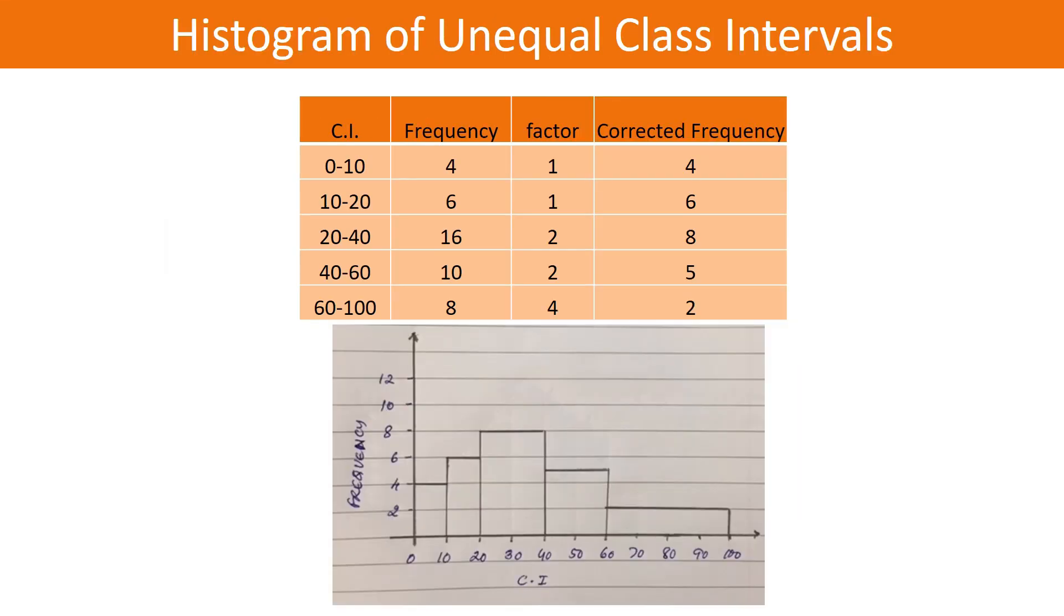Now suppose you have unequal class intervals. Pay attention to the data: 0-10 and 10-20 have intervals of 10, but 20-40 has an interval of 20 (twice as large), 40-60 is also twice, and 60-100 has an interval of 40 (four times the base interval).